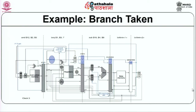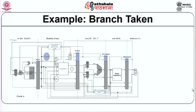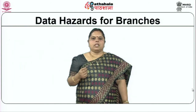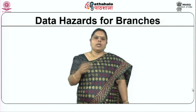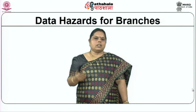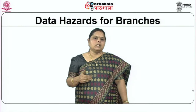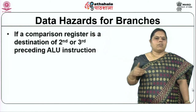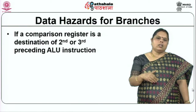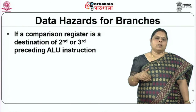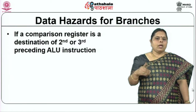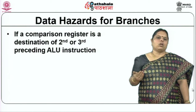To reduce branch delay, branch resolution must be moved to an earlier stage rather than the fourth clock cycle causing a three-cycle penalty. If you move resolution to an earlier stage, branch penalties are reduced. If a branch is taken, you need to pay a penalty of only one clock cycle. However, this aggressive implementation — shifting resolution from the fourth or third clock cycle to the second — may give rise to data hazards.